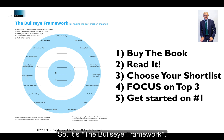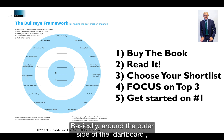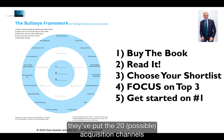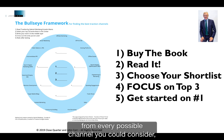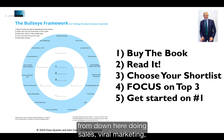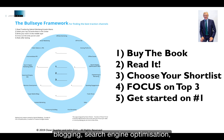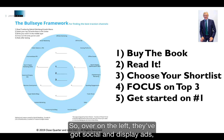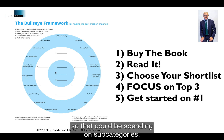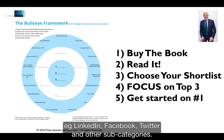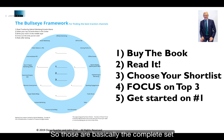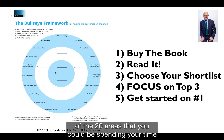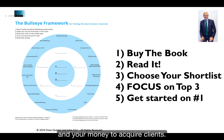The Bullseye Framework places 20 acquisition channels around the outer ring of a dartboard — every possible channel you can consider, from sales and viral marketing to blogging, search engine optimization, social and display ads spending on platforms like LinkedIn and Facebook, and other categories. These are the complete set of 20 areas where you could be spending your time and money to acquire clients.